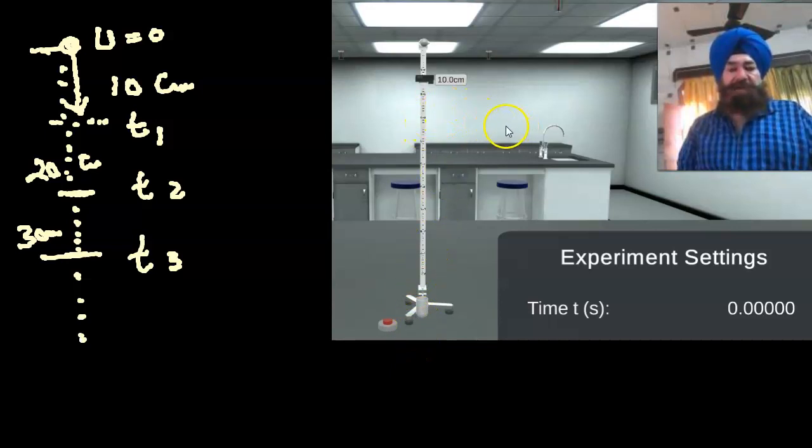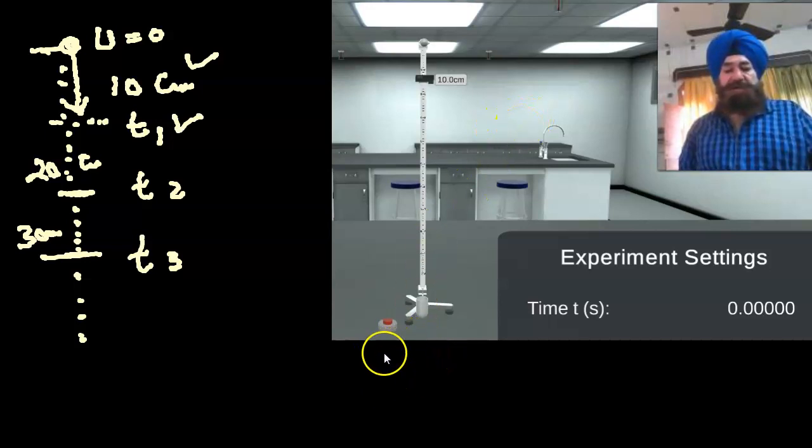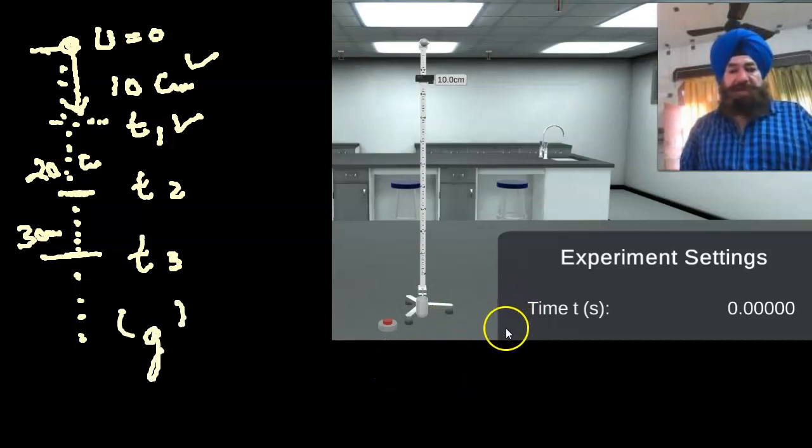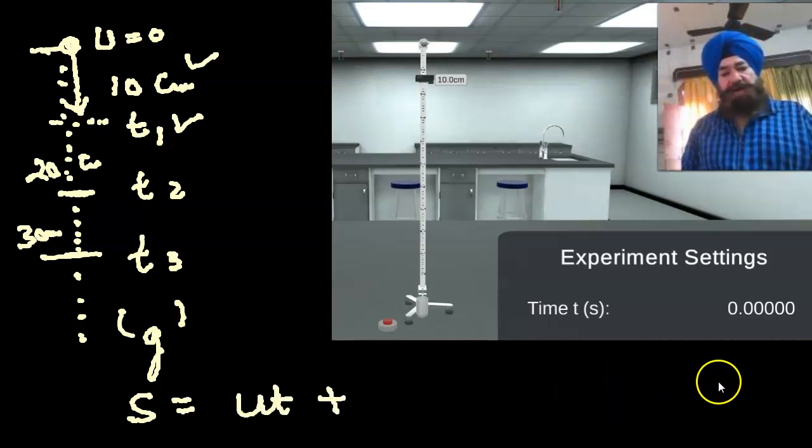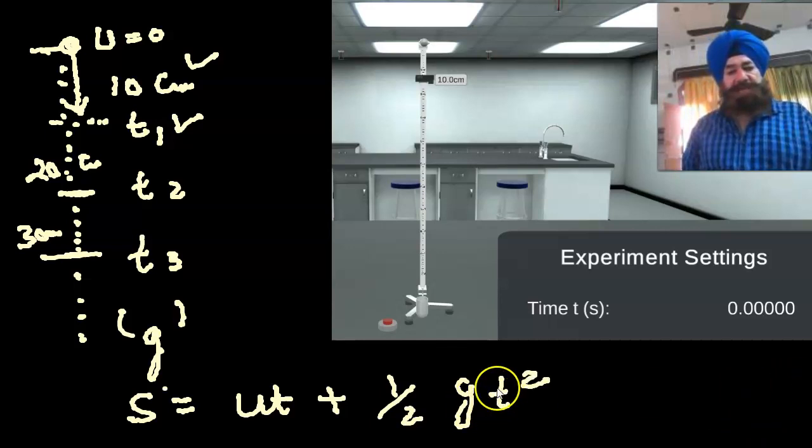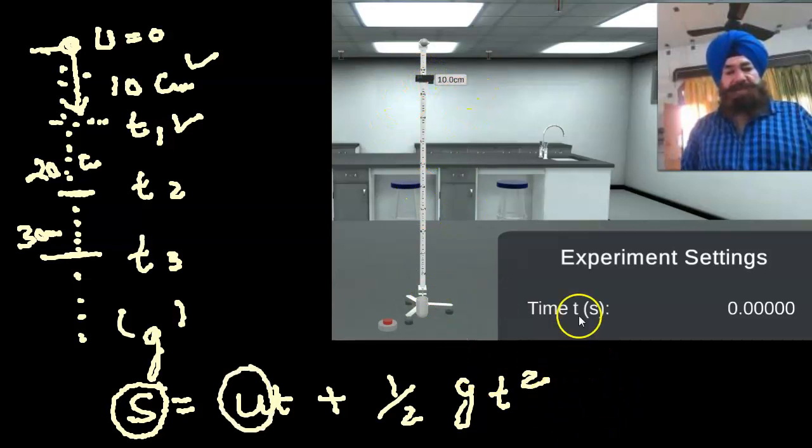If you have the distance as well as time, then you can calculate the value of acceleration due to gravity using the formula S equals UT plus half GT squared. S is the distance moved, like 10 centimeters, 20 centimeters. The initial velocity is taken as zero.